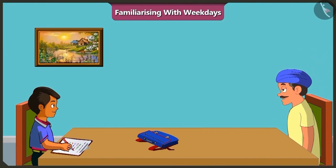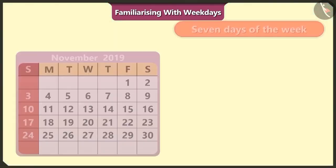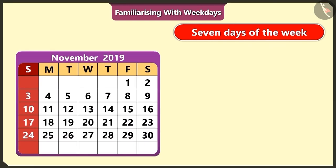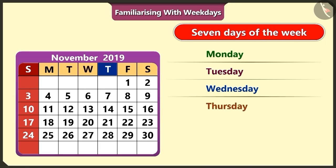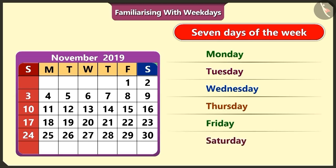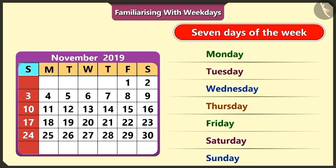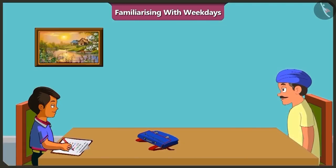Hey Chotu, what happened? Uncle, you told me about the seven days of the week — Monday, Tuesday, Wednesday, Thursday, Friday, Saturday and Sunday. But today my teacher said that there will be a drawing period tomorrow and we should bring a color box. But what day of the week is tomorrow? I don't understand.